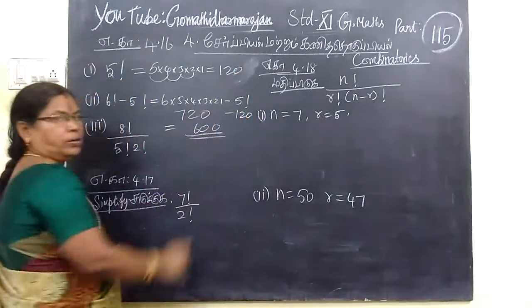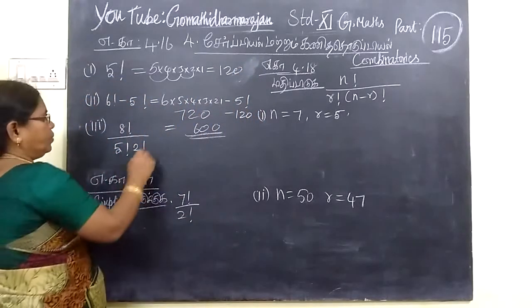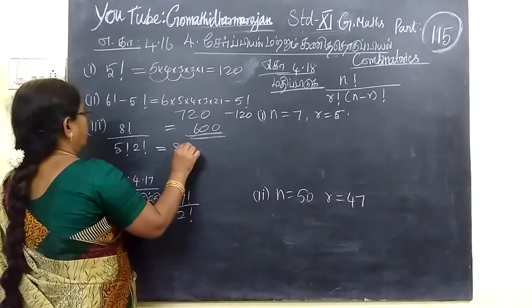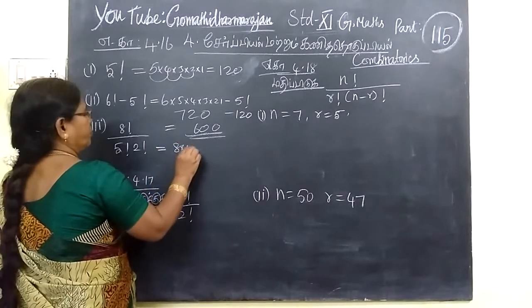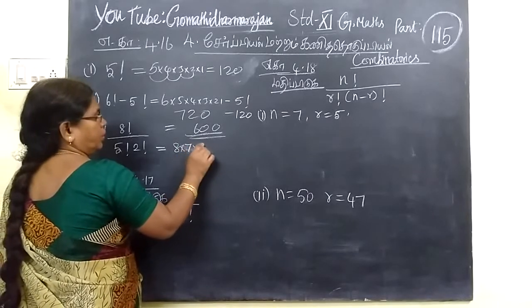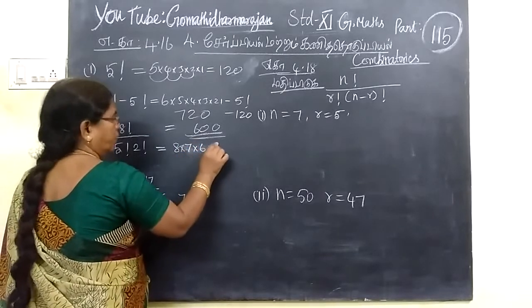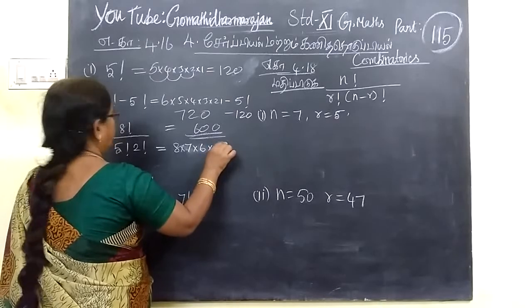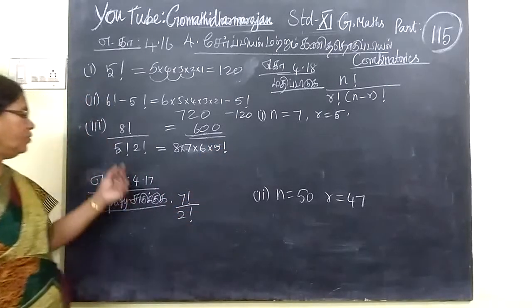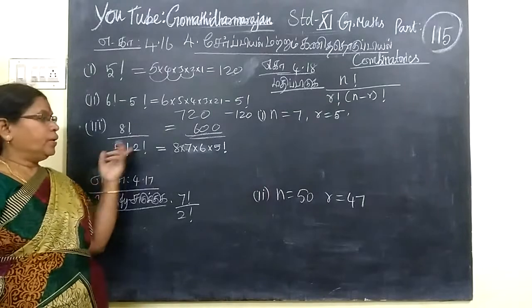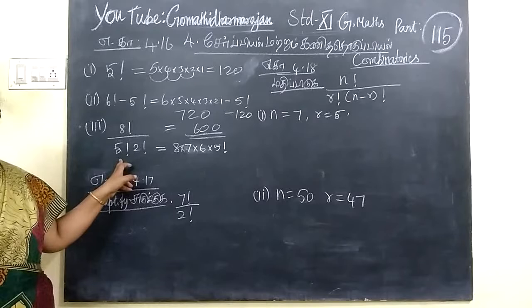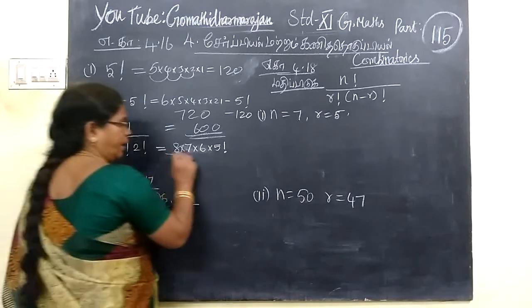8 times 4, 4 times 3 times, sorry, 8 times 7, then 6, then 5, and then stop any class. Now, here, once the 5 factorial is lifted, you know, 5 times 4 times 3 times 2 times 1, you can write. But here, the 5 factorial is lifted, you can cancel this.